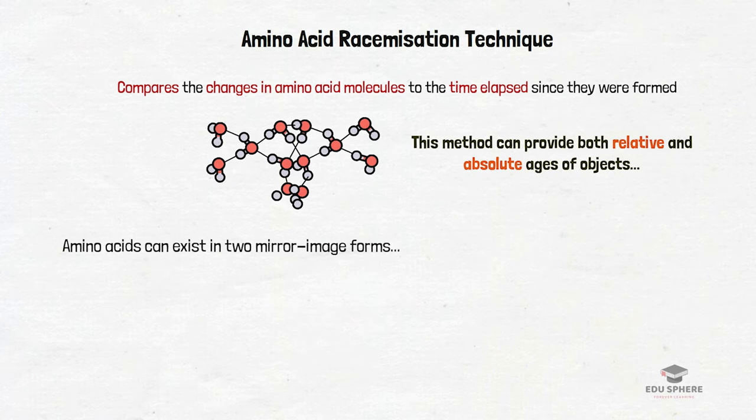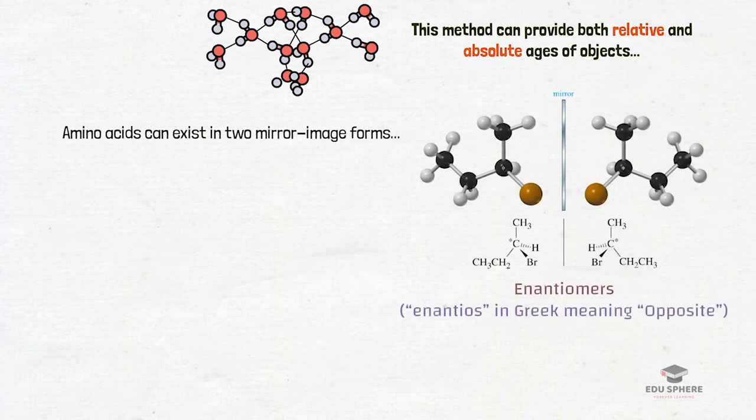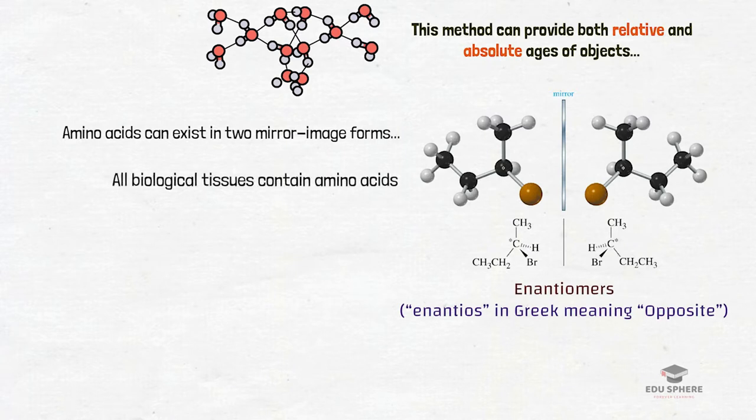The technique is based on the fact that amino acids which make up proteins present in all living things can exist in two mirror image forms. These mirror image forms are known as enantiomers. Now we already know that amino acids are the building blocks or subunits of proteins. All the biological tissues contain amino acids.